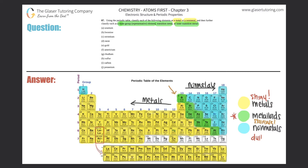You might be asking about the elements that aren't colored on the periodic table. At this moment in time, IUPAC — the standard of chemistry — has not categorized these elements specifically. They need to do more experiments, so these elements aren't yet placed in their own specific categories the way metals, non-metals, and metalloids are. That will likely change as we progress in the future.